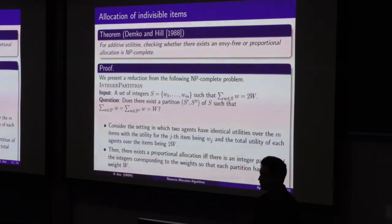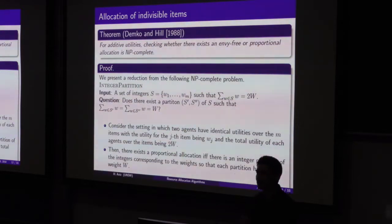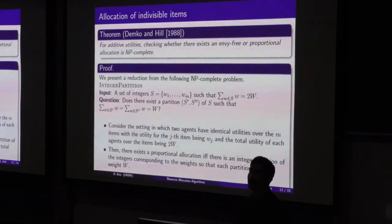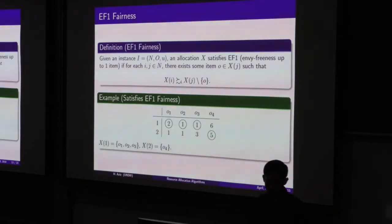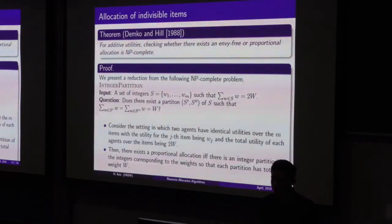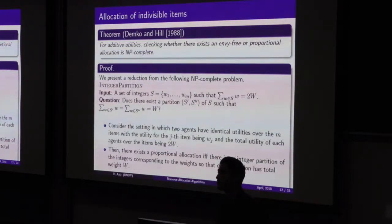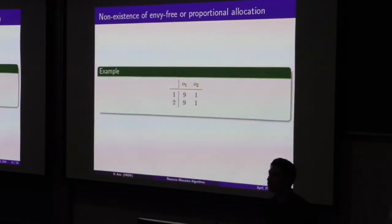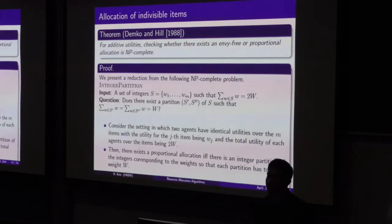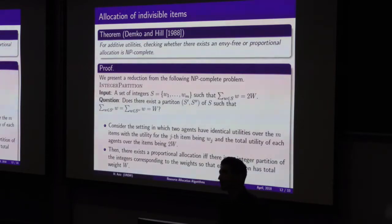This reduction was proved by Demko and Hill in 1988, and shows that envy-free and proportional allocations have two drawbacks: they may not exist, and finding them is computationally intractable unless the weights are small.